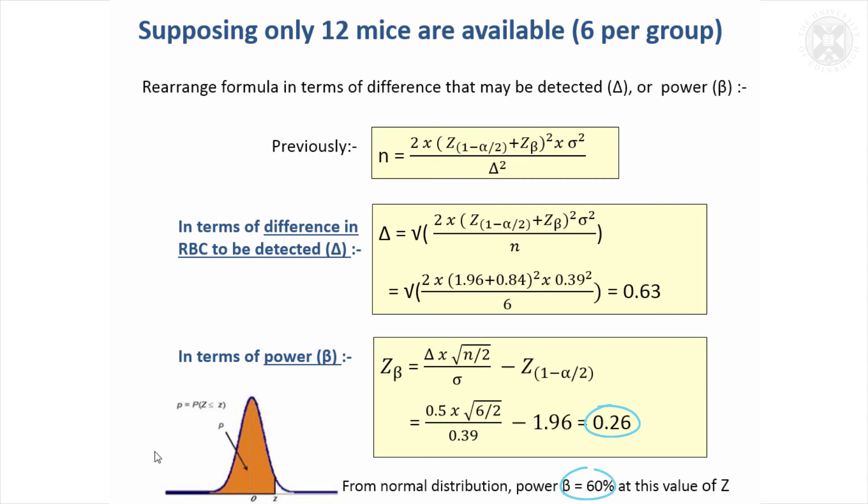It turns out that the power was 60% for that situation. So if you've only got six mice, you would only have 60% power of detecting a difference of 0.5. That's quite a low level of power, so there's a 40% chance that you'd do the study and find out absolutely nothing. You might want to think about, is that study still worth doing?